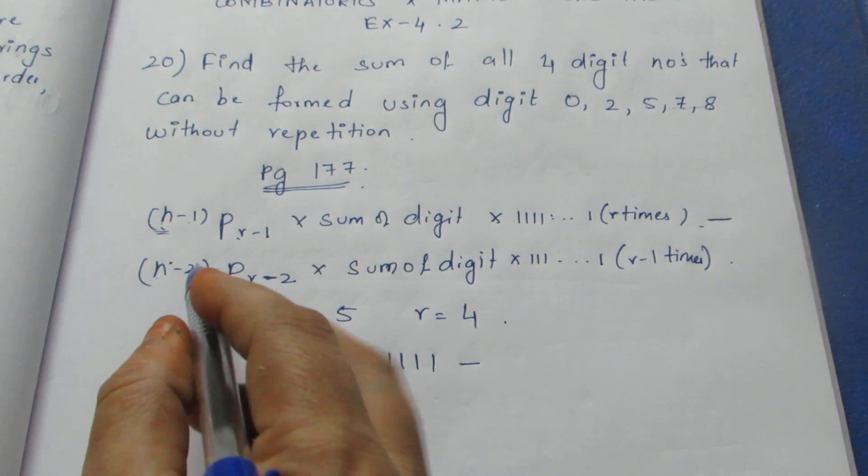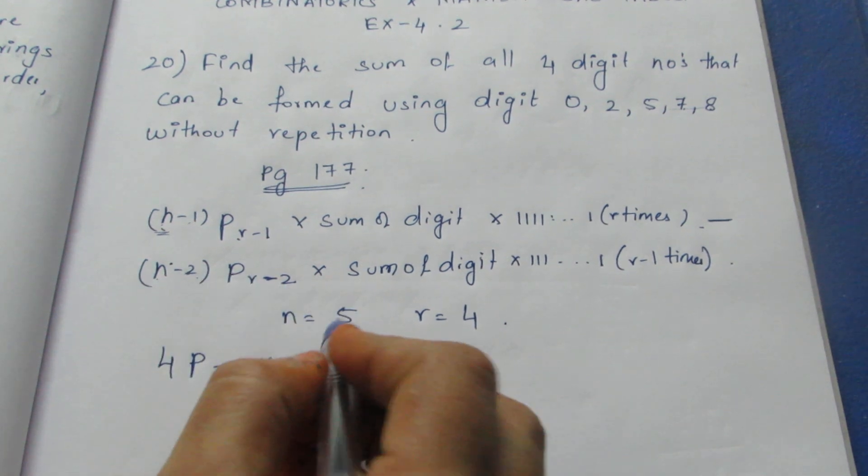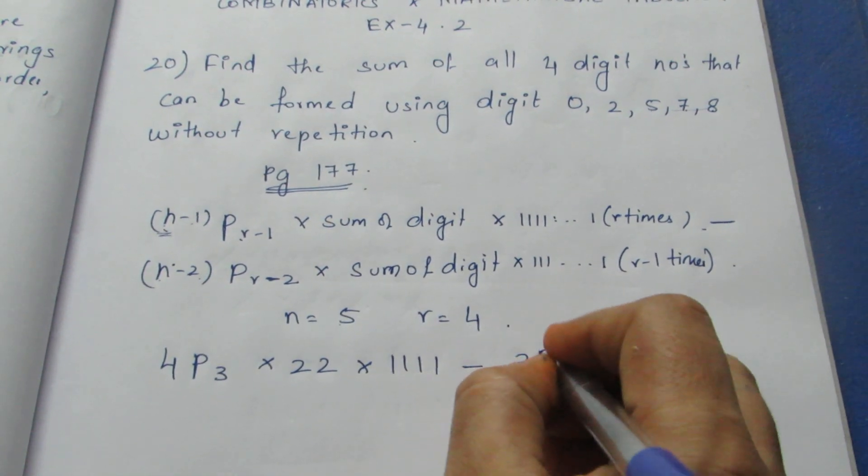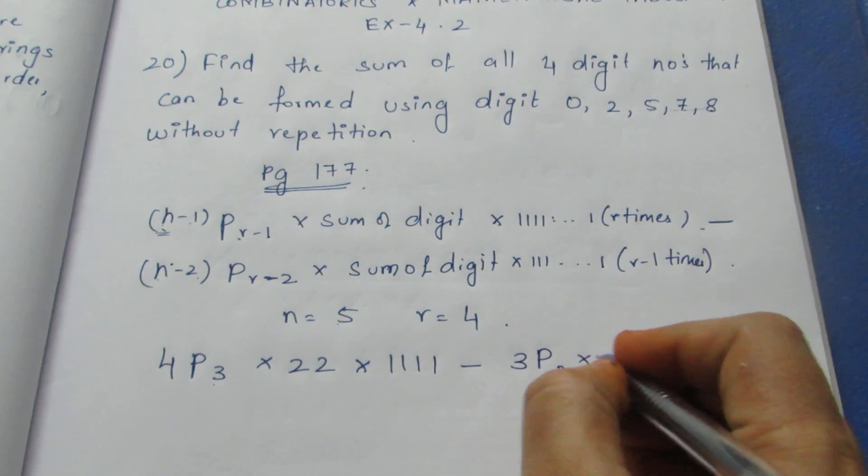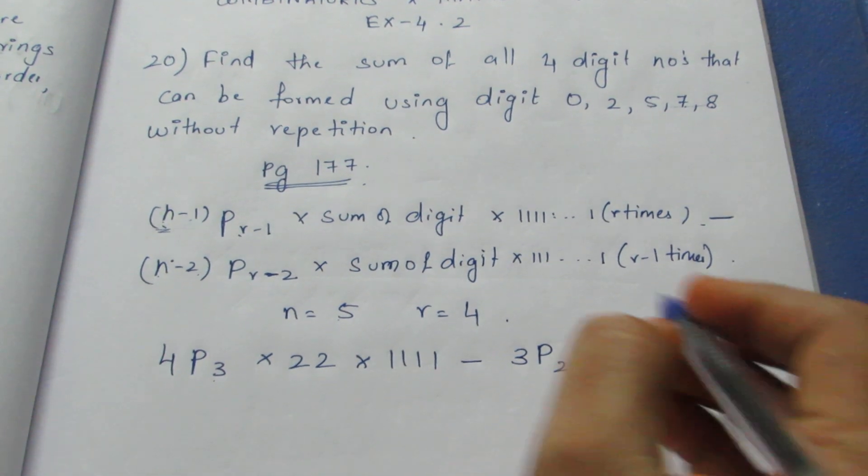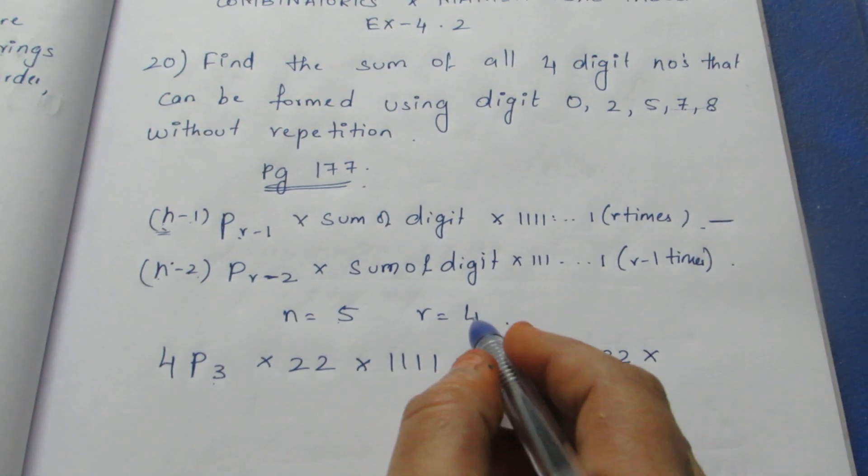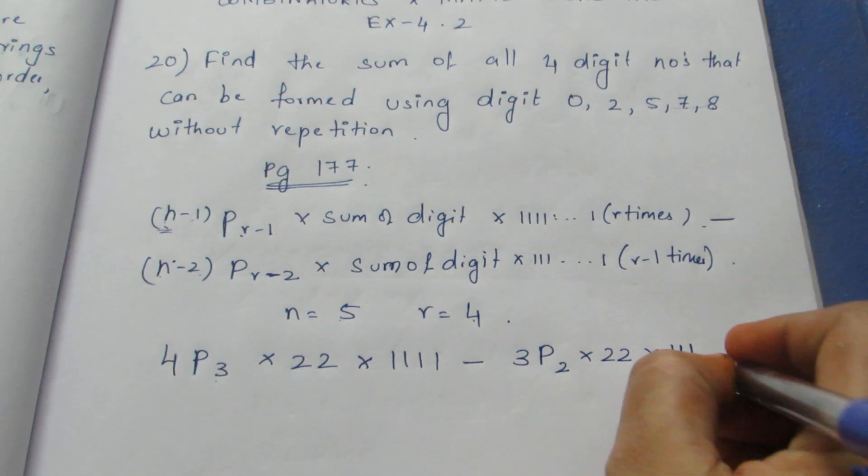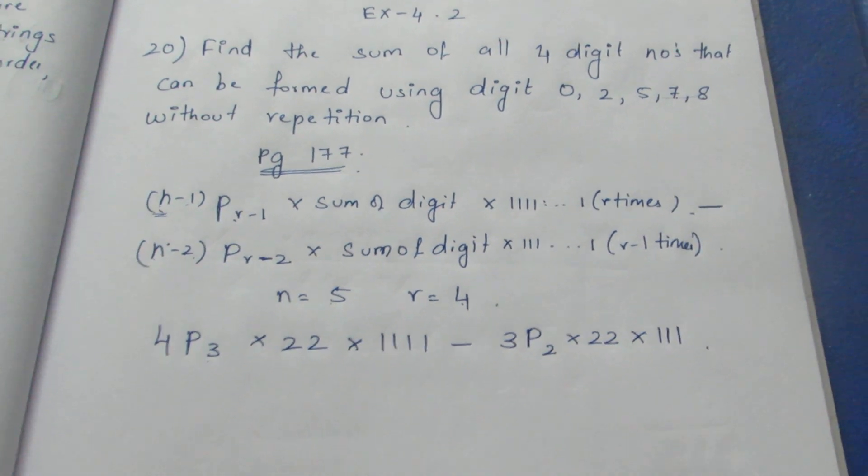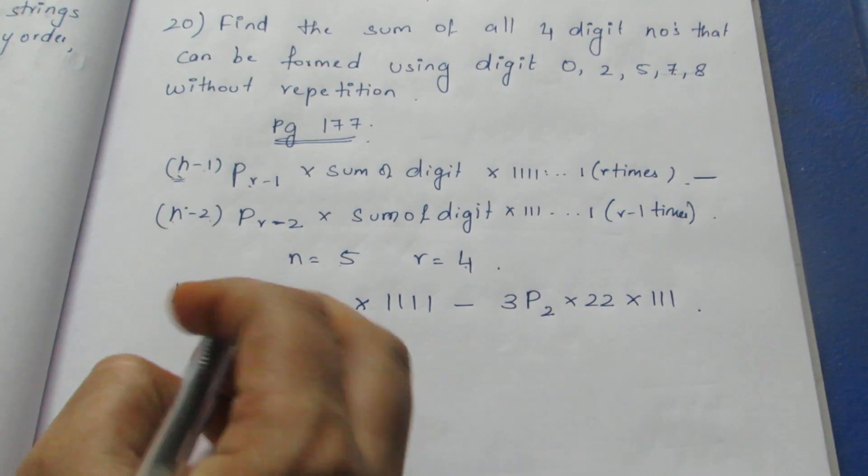Minus - here n minus 2, which is 5 minus 2 equals 3, into sum of the digits 22 into r minus 1, which is 3 ones: 111. So 4P3 into 22 into 1111 minus 3P2 into 22 into 111.